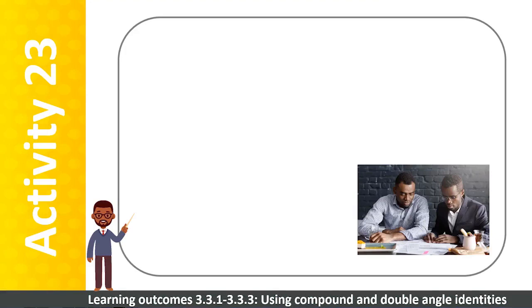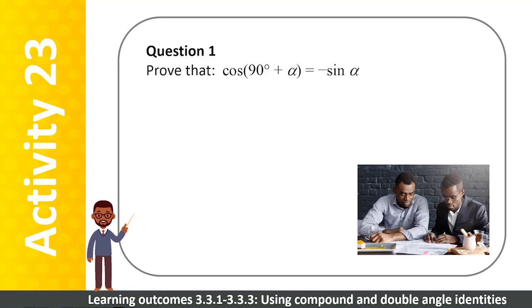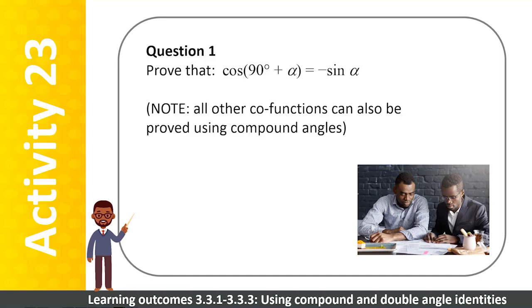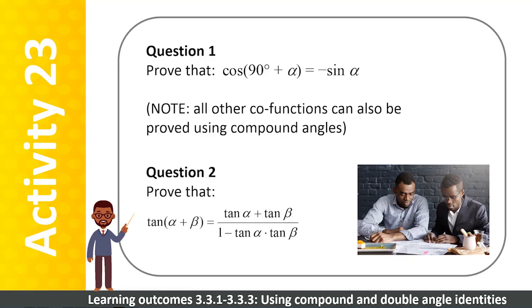Work on your own or in pairs for this activity where you'll be proving trig identities using compound angle identities. In question 1 you will prove one of the co-function identities — all other co-function identities can be proved similarly. Question 2 involves proving a trig identity with tan. Think about how you would help your students with these types of questions as you work through them.